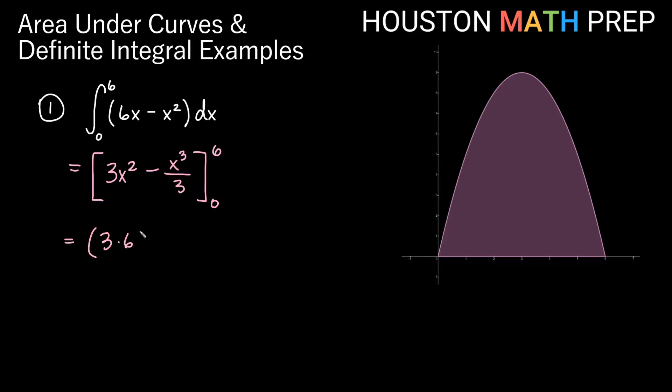So if we go ahead and plug in 6, that will be 3 times 6 squared minus 6 cubed divided by 3 minus 3 times 0 squared minus 0 cubed divide by 3. I think we can see here with the 0 everything is going to be 0. So let's focus over here. We'll have 3 times 6 squared, which would be 3 times 36 minus 6 cubed divided by 3. 6 cubed is 216 divided by 3.